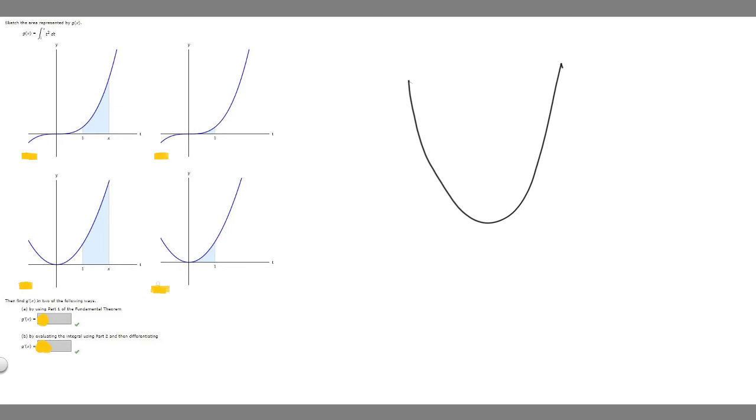And so based off that, we can eliminate these two, because these two right here, they go under, so these don't even look like the function t squared, so it can't be either of these.